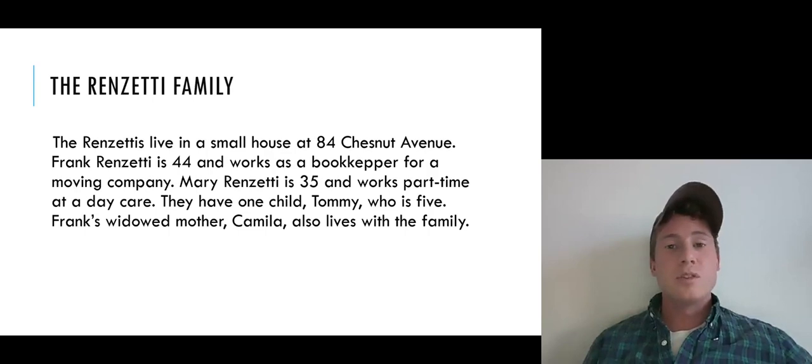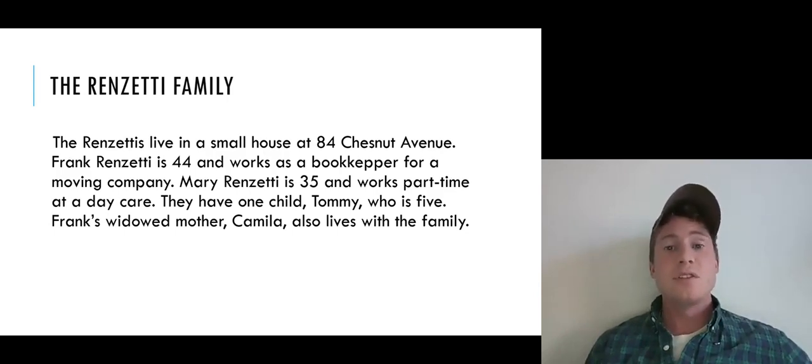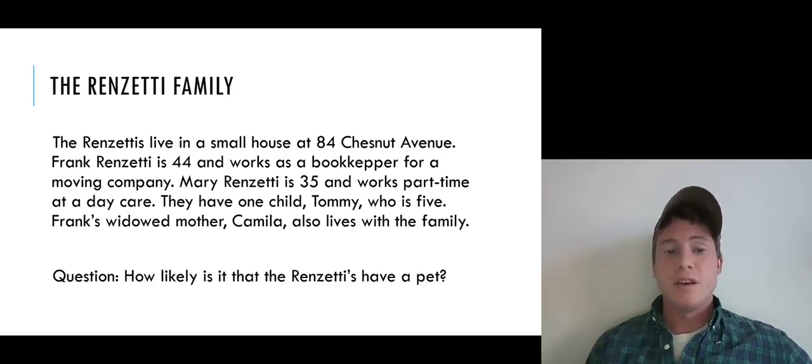We'll first think of an example from the Tetlock book and follows the Renzetti family. The Renzettis live in a small house at 84 Chestnut Avenue. Frank Renzetti is 44 and works as a bookkeeper for a moving company. Mary Renzetti is 35, she works part-time at a daycare center. They have one child, Tommy, who's five. Frank's widowed mother, Camilla, also lives with the family. So we're given this description of the family, that's our information. We're then asked, how likely is it that the Renzettis have a pet? This is a forecasting problem. We're asked to forecast just on the basis of this information whether the Renzettis have a pet.